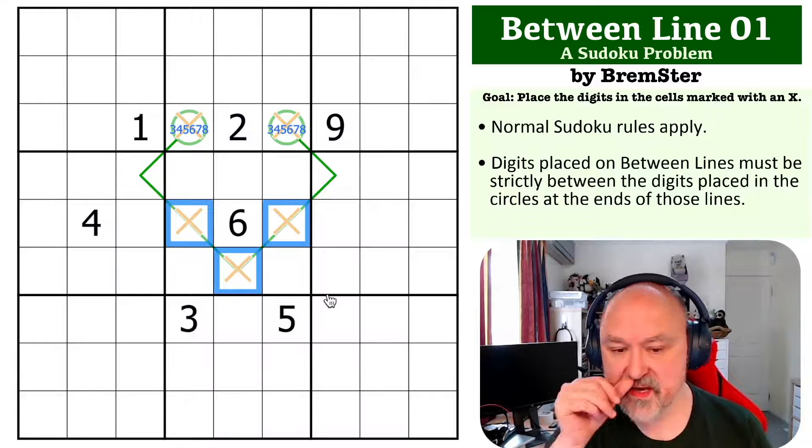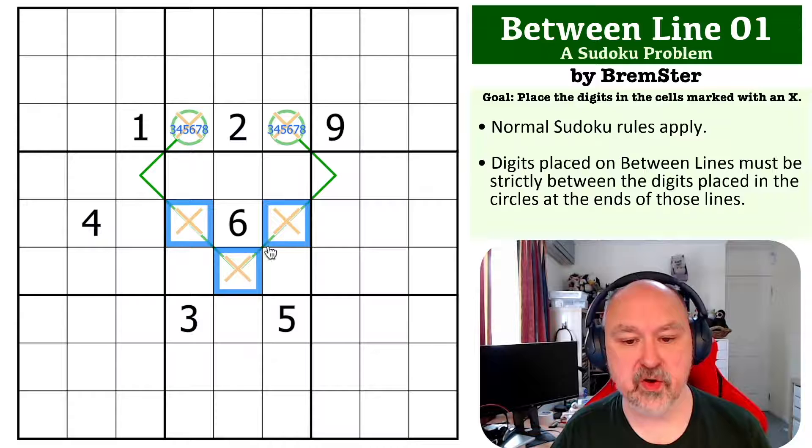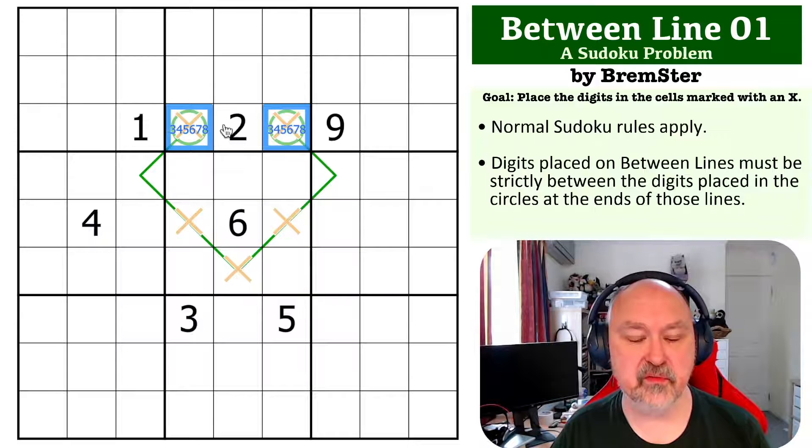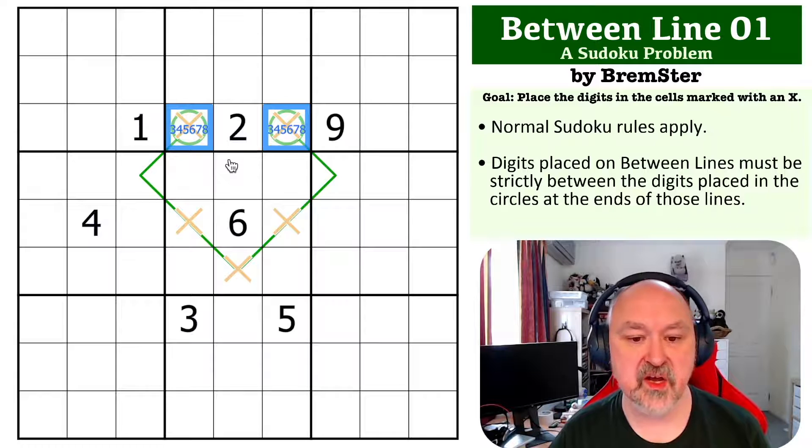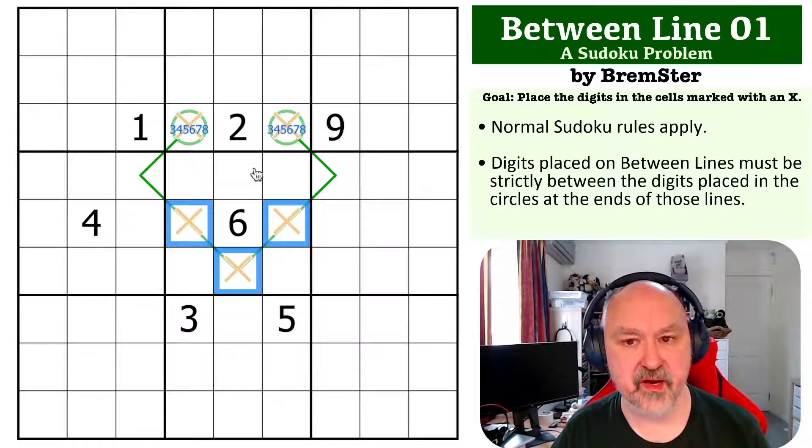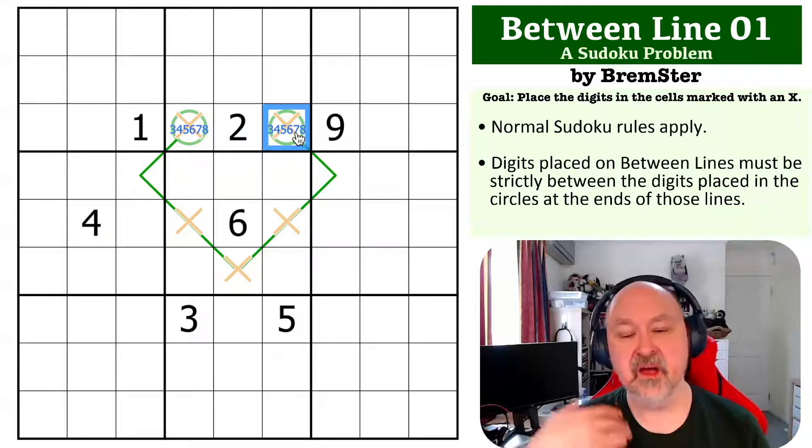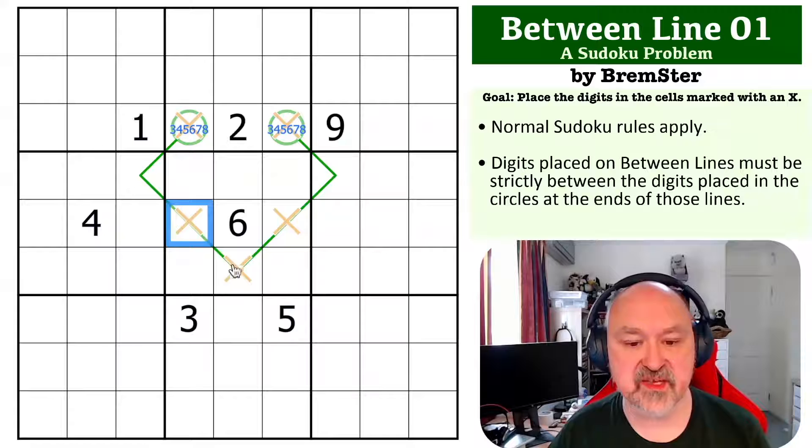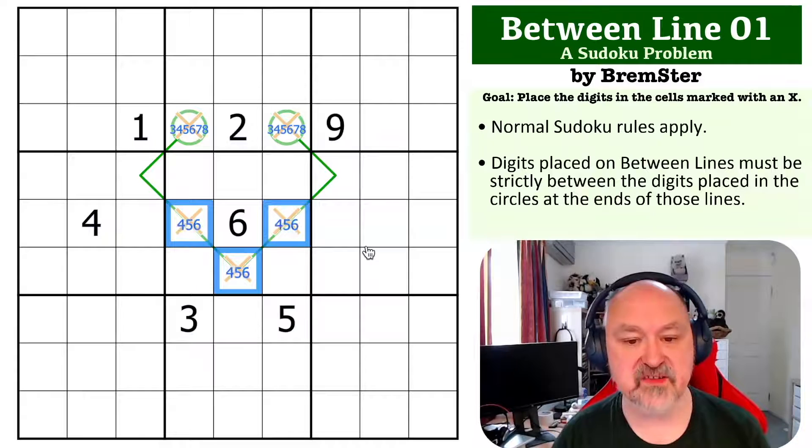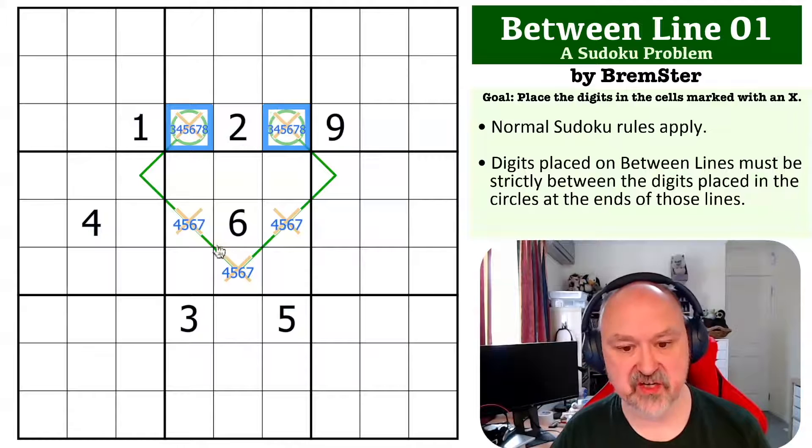These can't be one, two or three, because if these were one or two, then they could not be between these. The minimum you can put into those circles is three. So these have to be higher than three. They also have to be lower than eight, because otherwise you wouldn't have a digit higher. The digits in the circle, one must be lower than all of the digits on the line, one must be higher. So these can only be from four, five, six, or seven in order for there to be a lower digit and a higher digit in the circles.